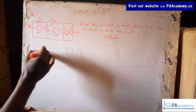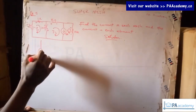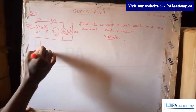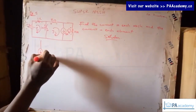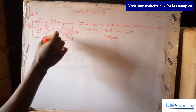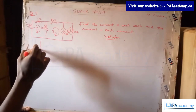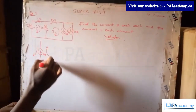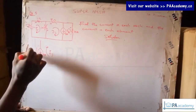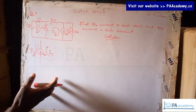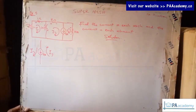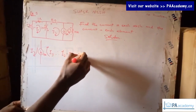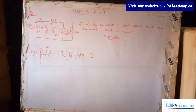This is where the super mesh concept applies — we have a current source between two meshes. The current source carries 4 amperes. The two currents flowing through it are i2 (downward) and i3 (upward). So our first equation is: i2 minus i3 equals 4 amperes. This is Equation 1.